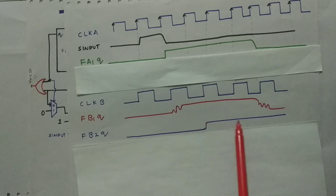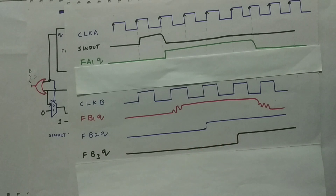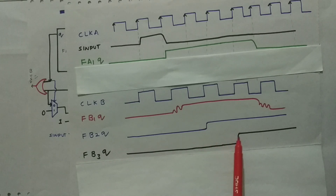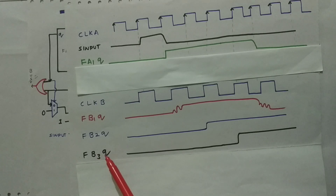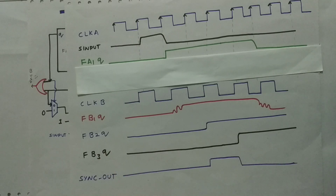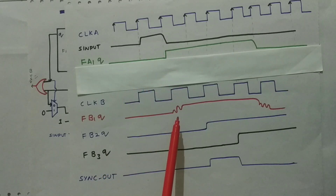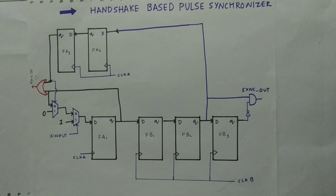FB2Q is then passed to FB3Q, which also captures the level. To convert the level back to a pulse, we perform an AND operation with FB2Q and the inverted output of FB3Q. This gives us our pulse back in the clock B domain. We are sending a pulse to a level, passing that level across clock domains, and then recovering the pulse from the level.